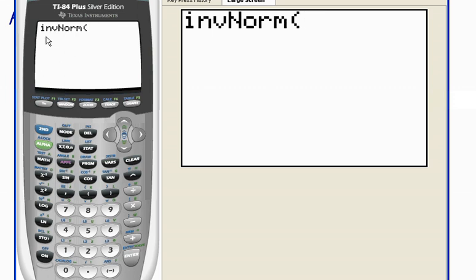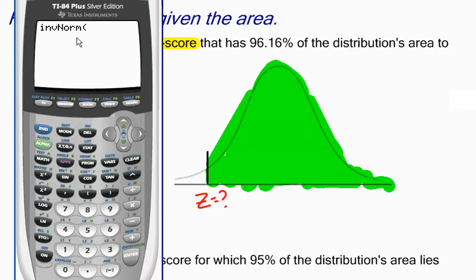Now the calculator wants a number, it wants a value right here in order to have the calculator give us the right value. The calculator assumes that the number we're going to give it is the area on the left.